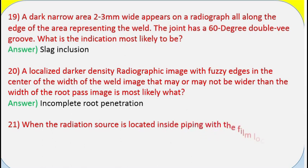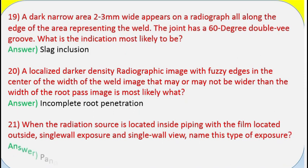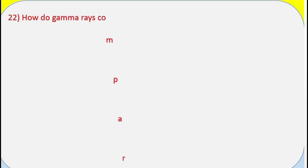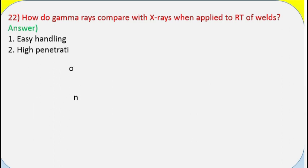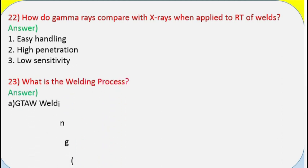Question 21: When the radiation source is located inside piping with the film located outside — single-wall exposure and single-wall view — name this type of exposure. Answer: Panoramic. Question 22: How do gamma rays compare with X-rays when applied to RT of welds? Answer: (1) Easy handling. (2) High penetration. (3) Low sensitivity.